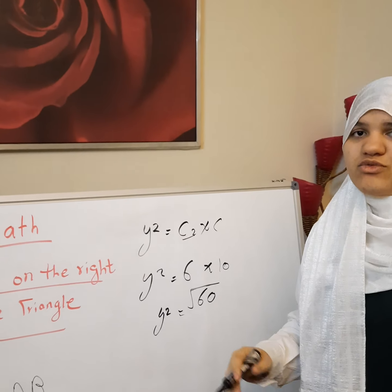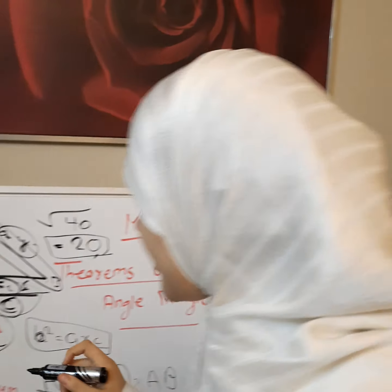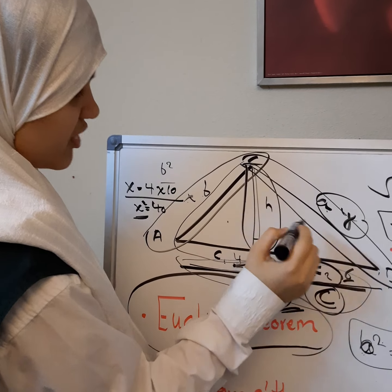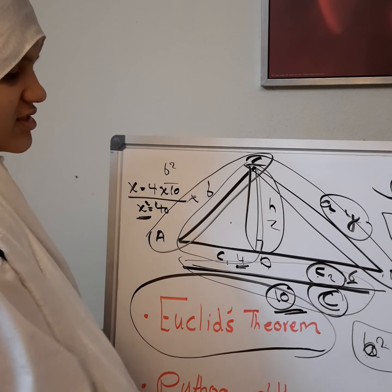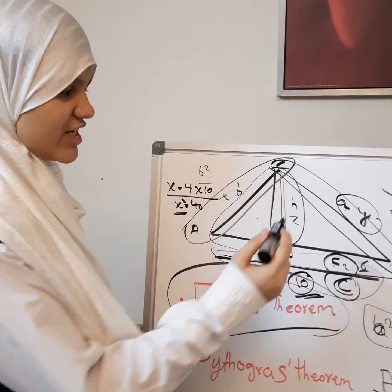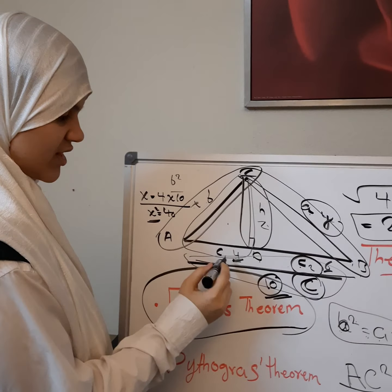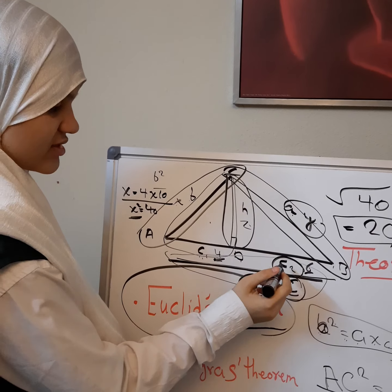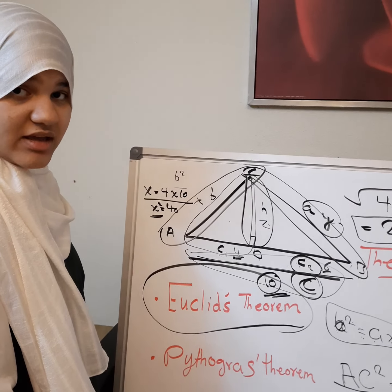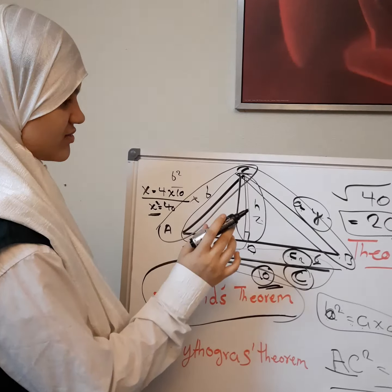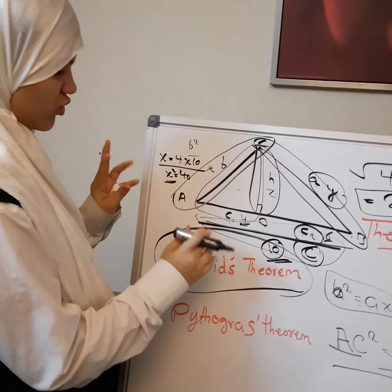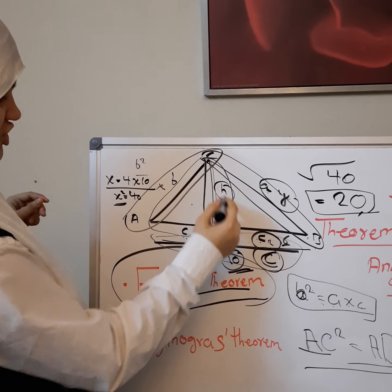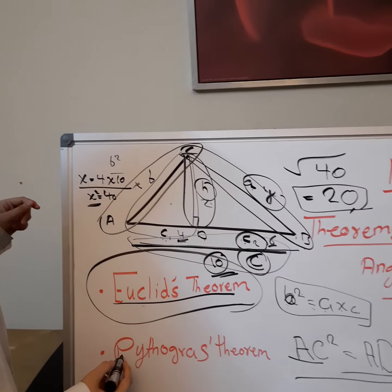There is also a formula for the height h. If h is the unknown, we use: h squared equals c1 times c2. That was the equality theorem. Now the next one will be the Pythagorean theorem.